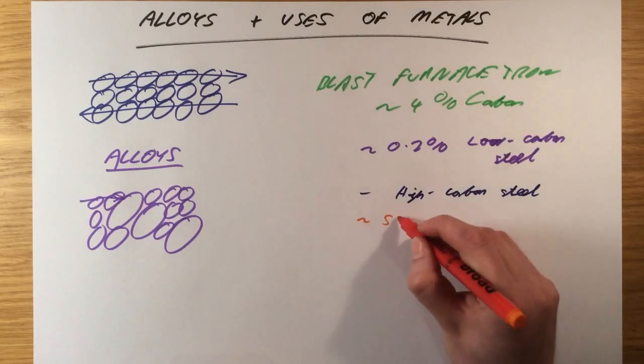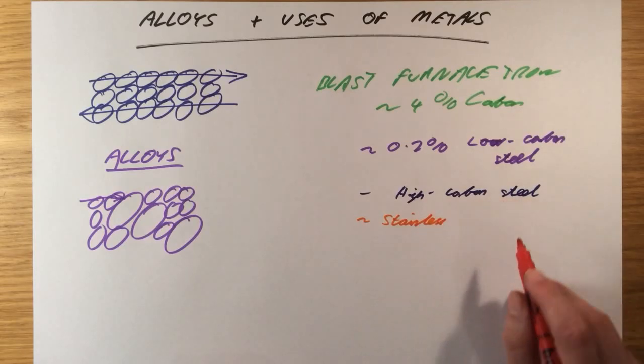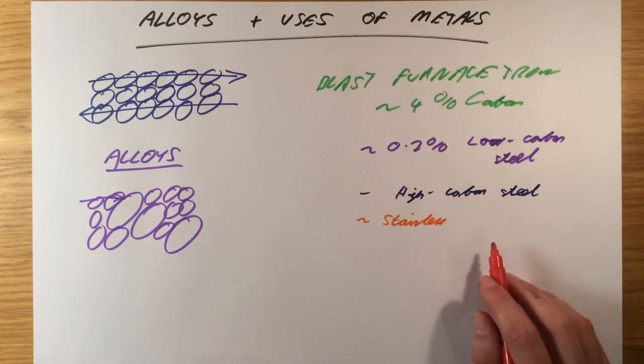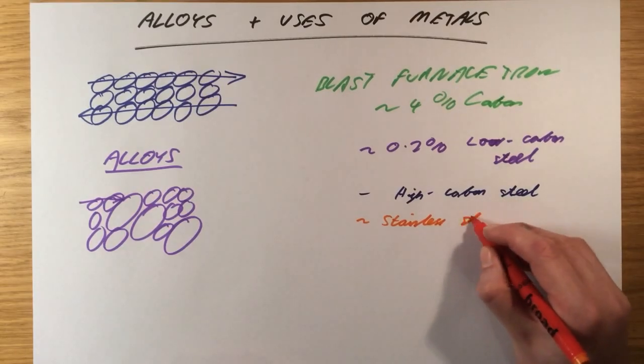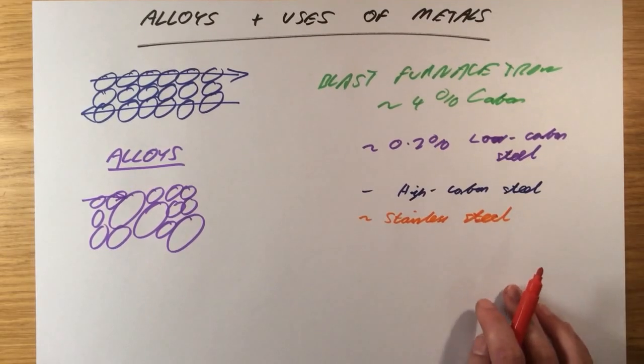For example, stainless steel is a mixture of iron with a small amount of carbon and also some nickel and chromium. And as the name suggests, that type of steel is not going to corrode.